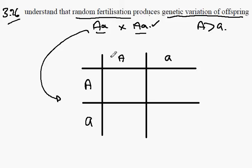If this gamete and this gamete fertilize, that will give us big A, big A. If this gamete fertilizes this one, then we would get big A, little a. Each of these two genotypes are possibilities.